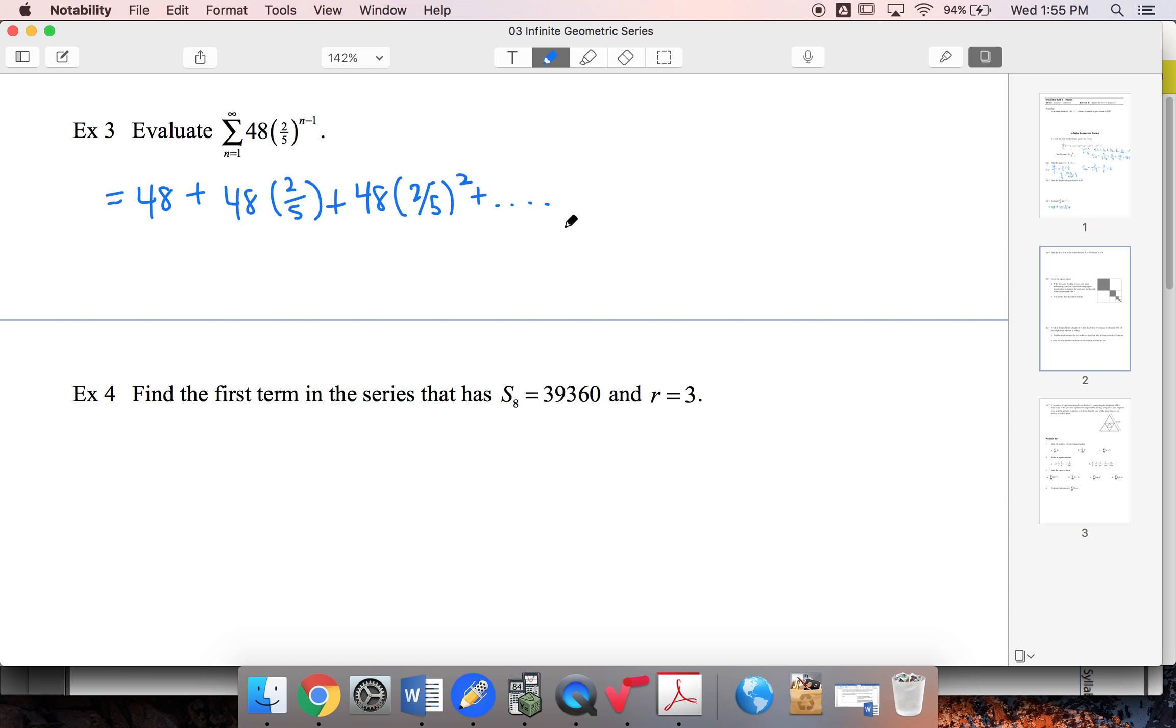So it is, in fact, geometric. I've got a u1 of 48 and my r value is 2 fifths. So then my sum to infinity is going to be u1 over 1 minus r.